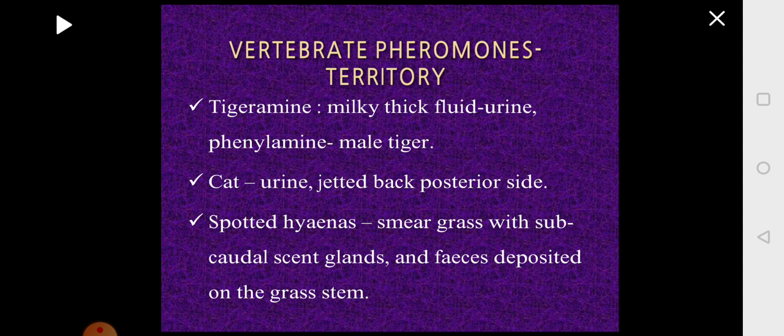In spotted hyena, wherever they are resting, they will smear the grass with pheromones released by the subcaudal scent glands, and also deposit feces on the stems of the grass. With the help of the secretion of the scent gland and the feces, they try to mark their territory.